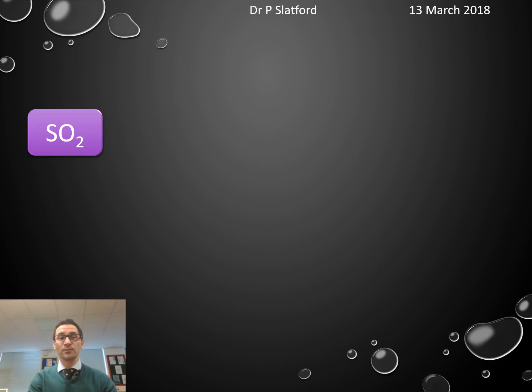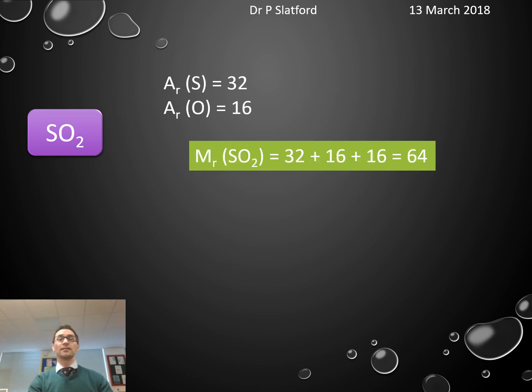If we look at some other examples, sulfur dioxide. Now sulfur has an atomic mass of 32, oxygen has an atomic mass of 16, and therefore our relative formula mass of sulfur dioxide is 32 plus 16 plus 16, which equals 64. And there are two oxygens. Remember, it's this 16 plus 16 because there are two oxygens in the chemical formula.